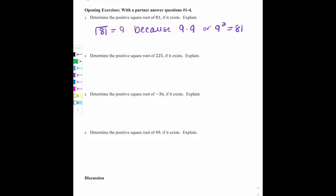Number 2, determine the positive square root of 225 if it exists. Explain. So if we have the square root of 225, we have 15. And that's because 15 times 15, or 15 times itself, which is 15 squared as well, is 225.